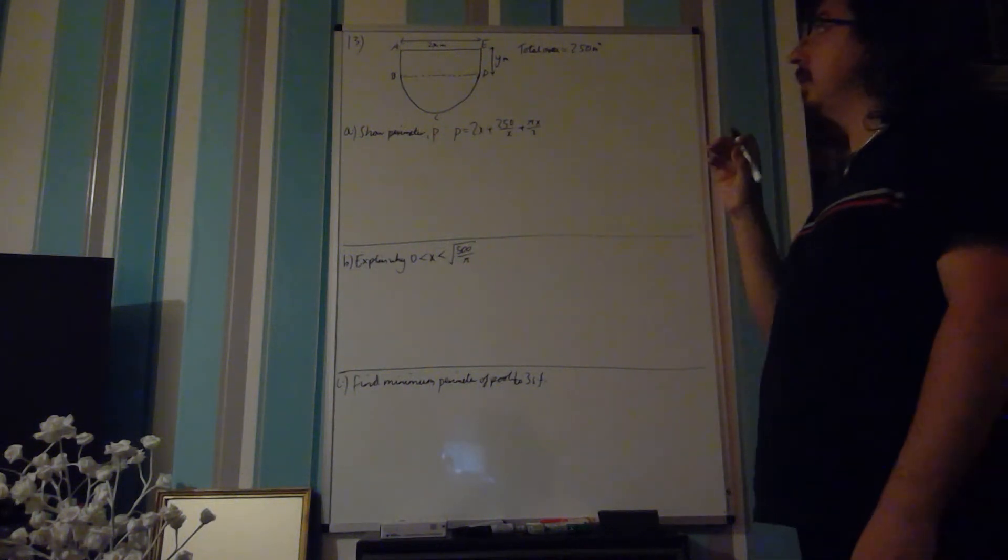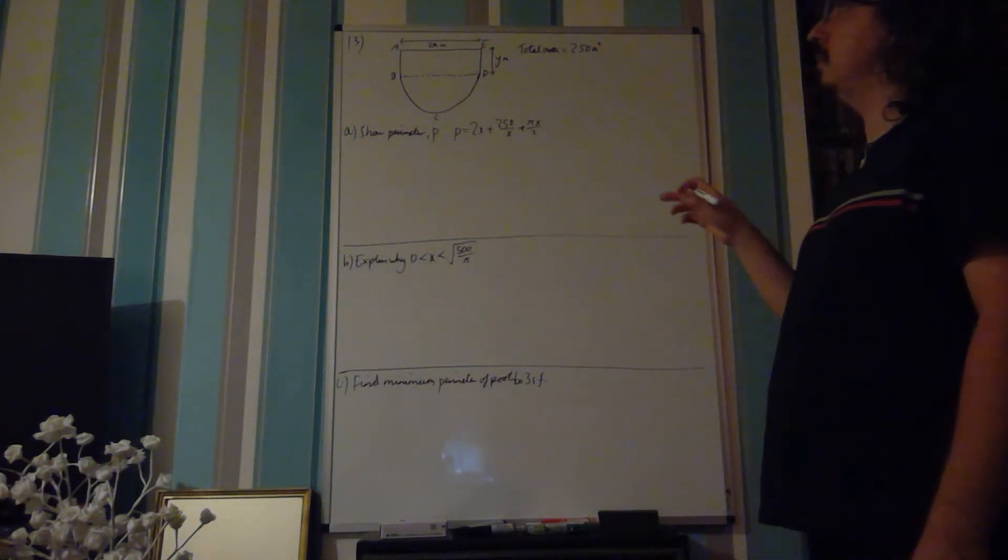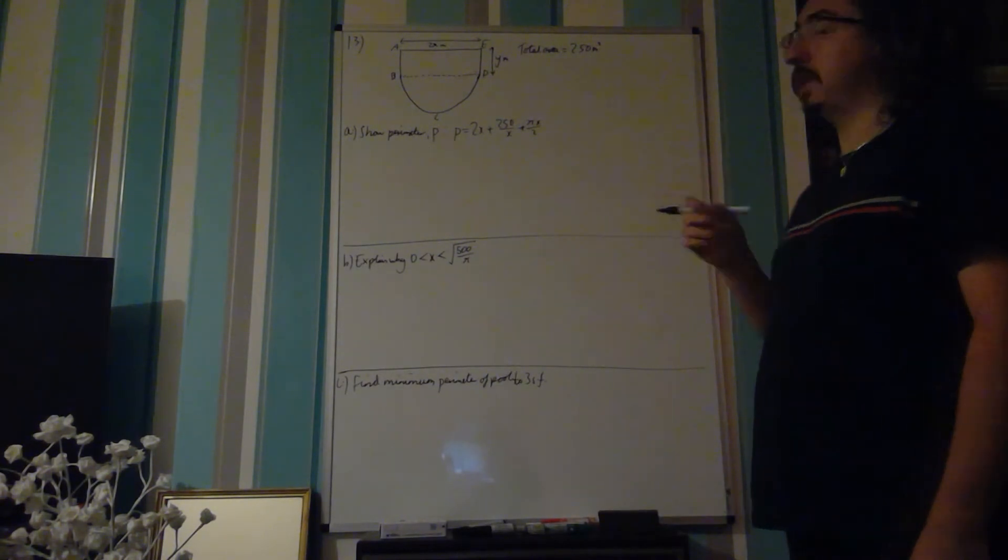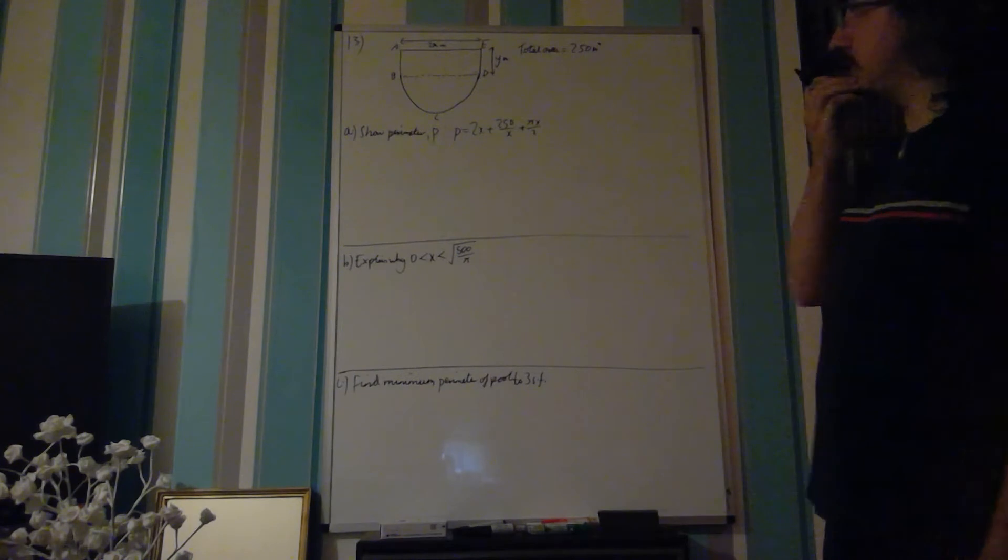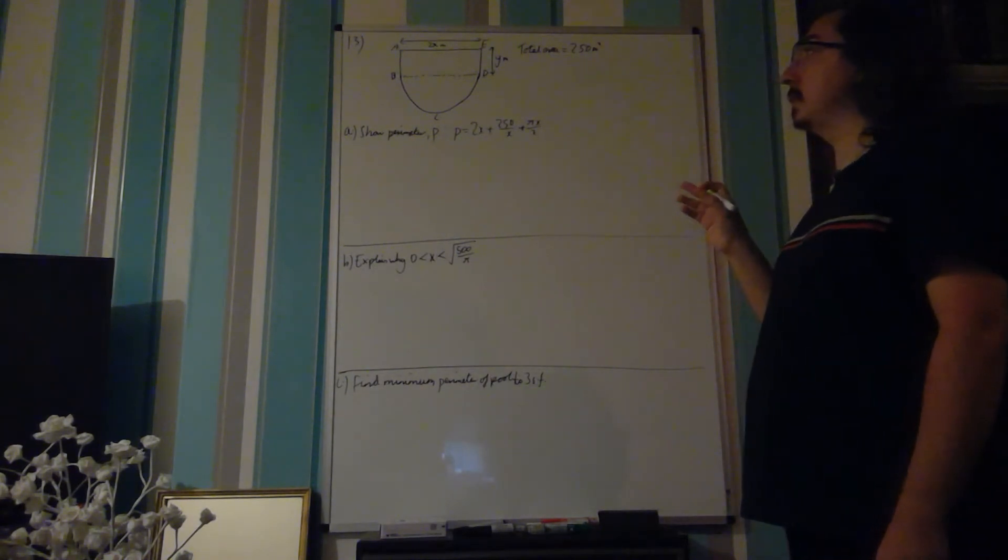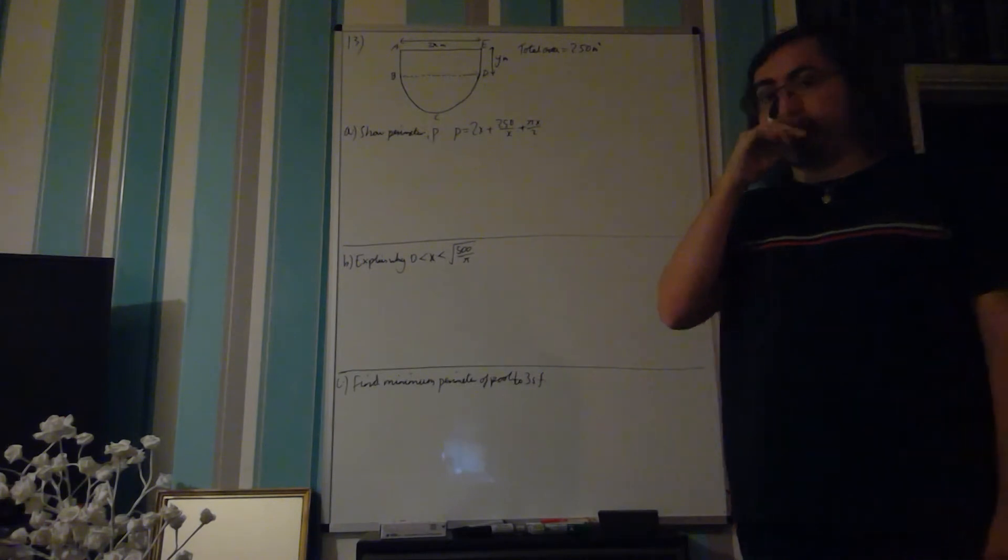In question 13, you're given a rectangle ABDE and a semicircle BDC. In part 2, we want to show that the perimeter of this is 2x plus 250 over x plus pi x over 2.